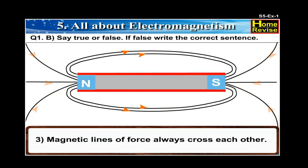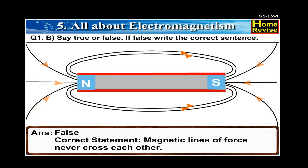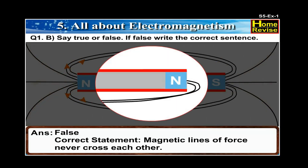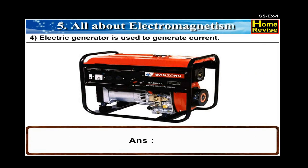3. Magnetic lines of force always cross each other. The answer is False. The correct statement is: Magnetic lines of force never cross each other. 4. Electric generator is used to generate current. 5. Magnetic lines of force never cross each other. The answer is True.